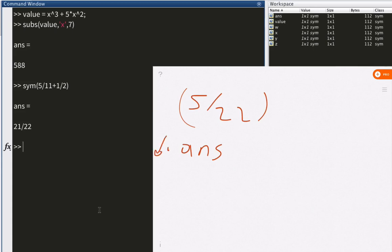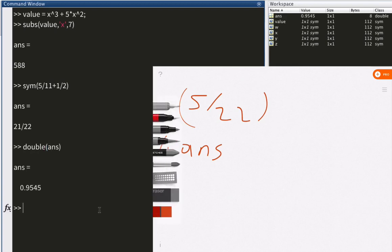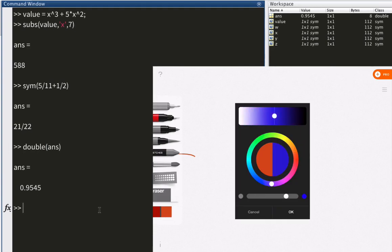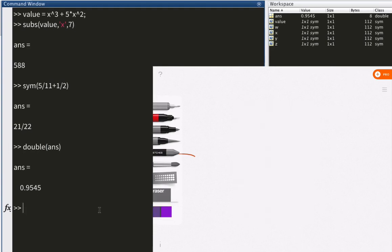It was ANS, right? ANS, and you say double. Well, let me do that actually. Double ANS, and you see, this is the result we want to get.